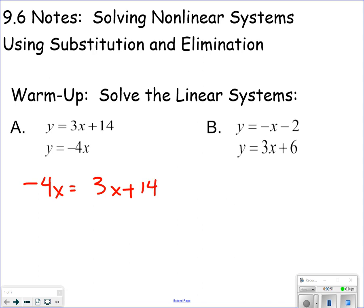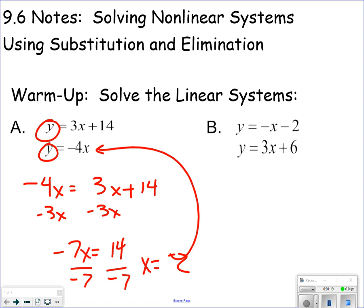If y equals 3x plus 14 and y equals negative 4x, then negative 4x equals 3x plus 14, because they're both equal to the same thing. They're both equal to y, so I can set them equal to each other. Subtracting 3x, I get x to equal, using some algebra skills here, x to be negative 2.